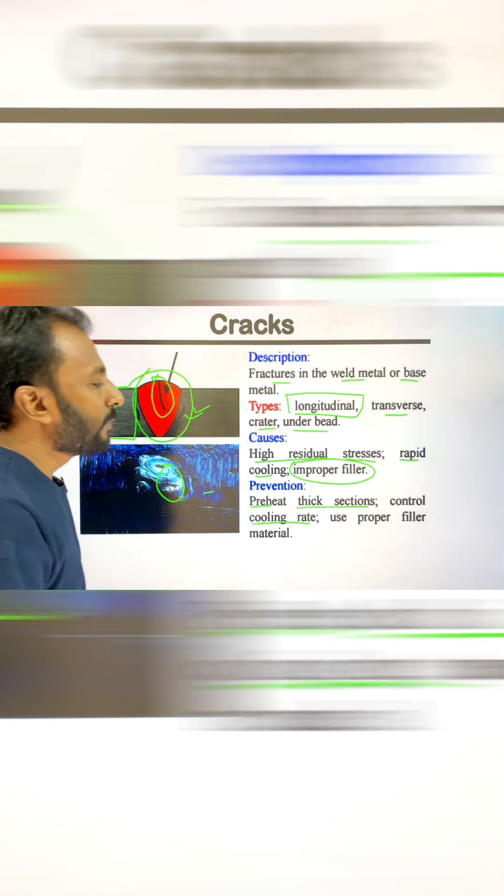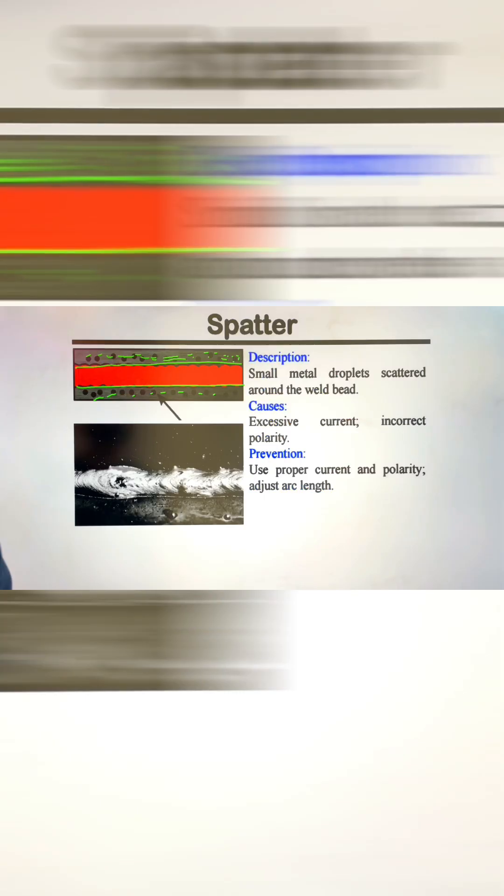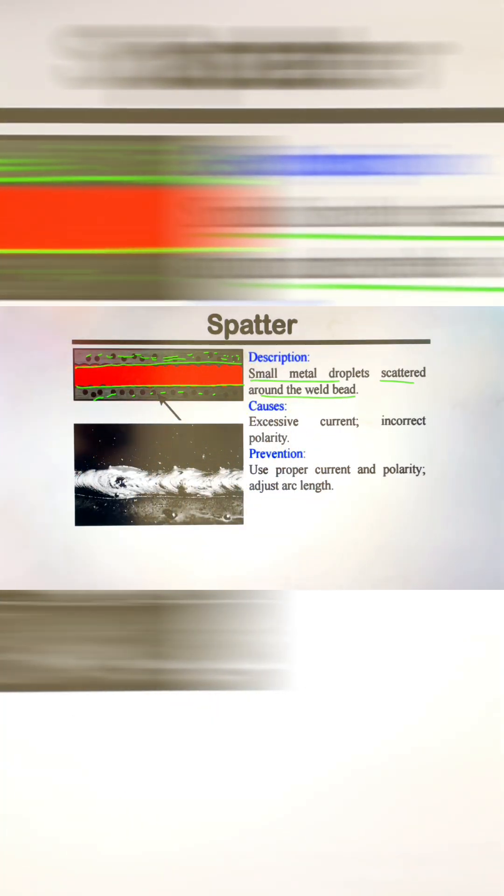We need to control the cooling rate and cool the metal in a proper way. When welding, small metal droplets scattered around the weld bead are called spatter, which occurs when using excessive current. Distortion is the deformation of welded parts due to uneven heating and cooling.